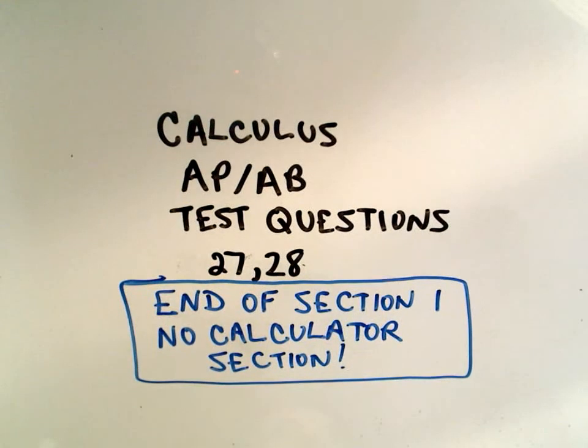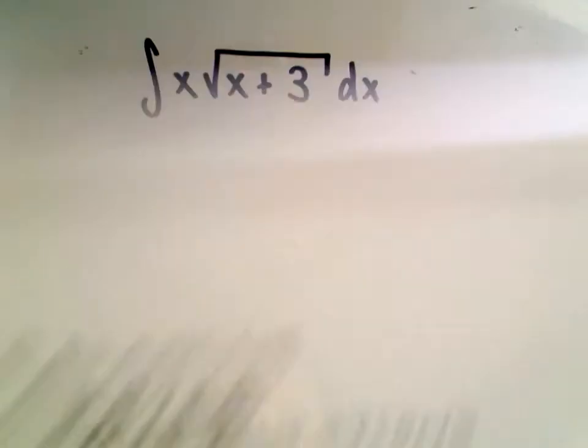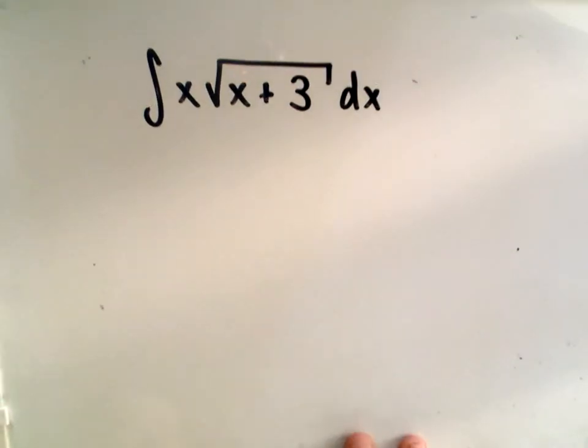Alright, this will be questions 27 and 28 of the AP/AB test. This is the end of the first section, and on these first set of problems, you're not allowed to use a calculator, so that's going to be one of the distinctions.